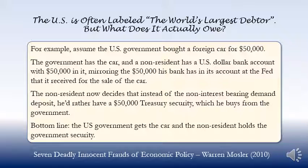The non-resident now decides that instead of the non-interest-bearing demand deposit, he'd rather have a $50,000 treasury security, which he buys from the government. Bottom line, the U.S. government gets the car and the non-resident holds the government security.